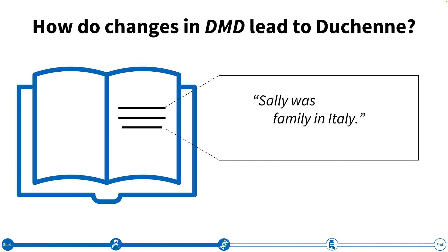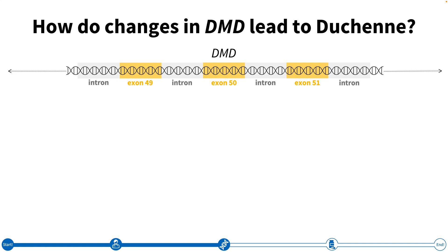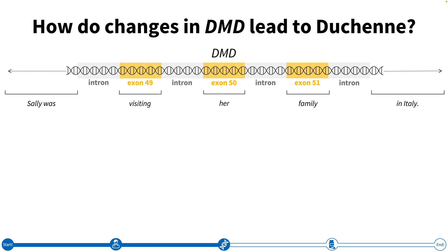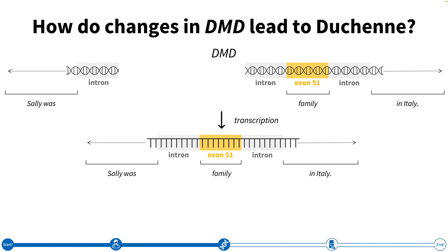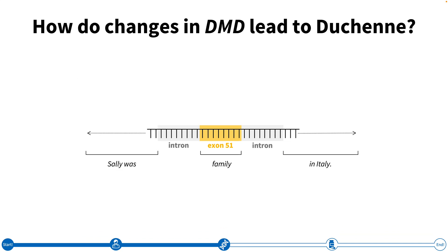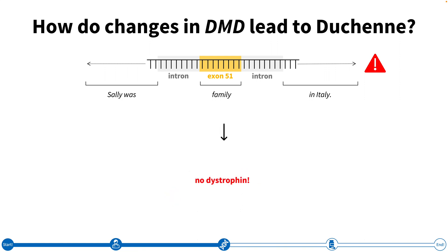Let's take a closer look at how this works. We can think about different exons in the DMD gene as different parts of the sentence: 'Sally was visiting her family in Italy.' When exons 49 and 50 are deleted and the DNA is transcribed into RNA, our sentence doesn't make sense anymore — 'Sally was family in Italy.' A proofreading process in the muscle cell detects this mistake and the warning signal causes it to be degraded. As a result, no dystrophin is produced, leading to the muscle weakness we see in individuals with Duchenne.